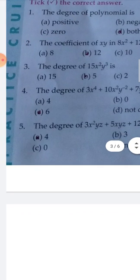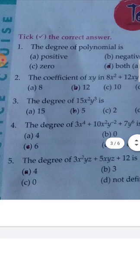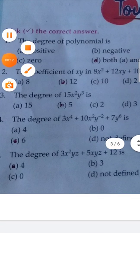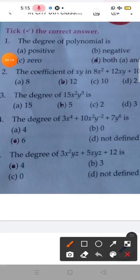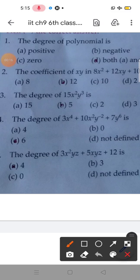Let us start with question number 1. The degree of a polynomial is positive and C, so your option is both A and C.